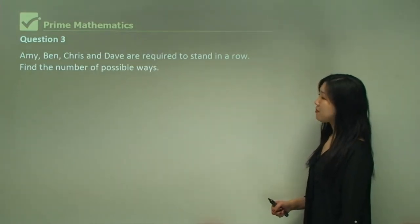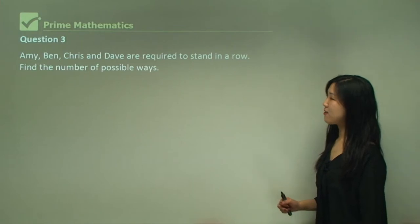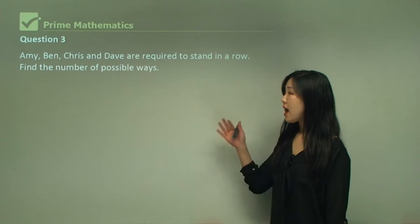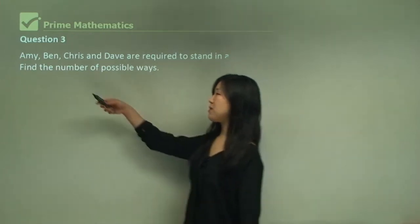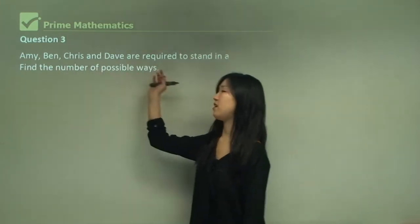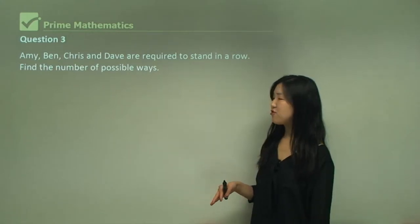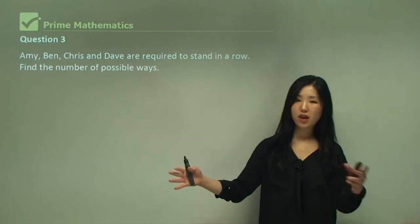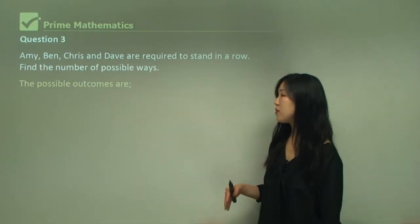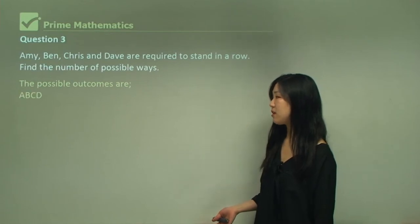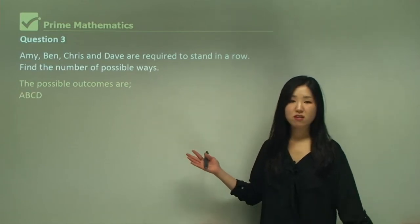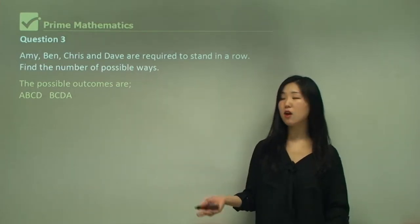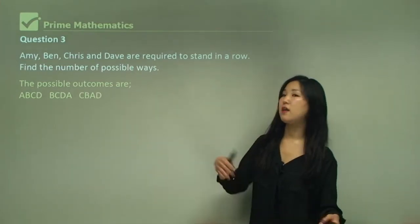Question three: Amy, Ben, Chris, and Dave are required to stand in a row. Find the number of possible ways. I'll call them A, B, C, and D. Let's try to list out the number of ways. They're in a row so they can be arranged in different ways — Amy, Ben, Chris, Dave; or Ben, Chris, Dave, Amy; or Chris, Ben, Amy, Dave; and the list goes on.